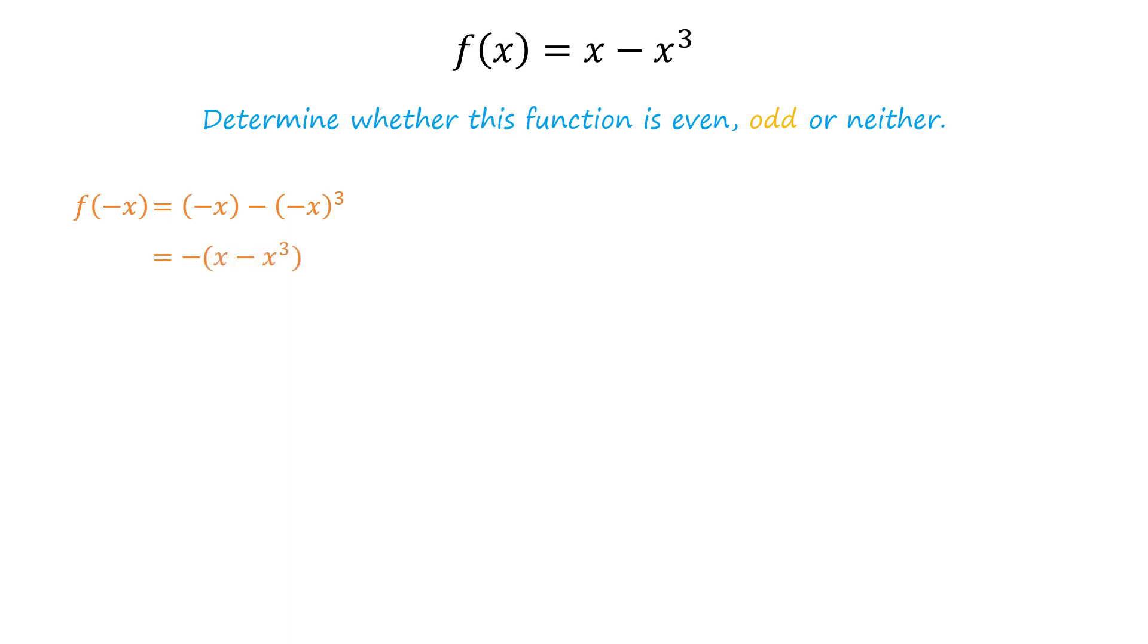Factoring out the negative sign, we can write f of negative x equals negative of x minus x cubed, which equals negative of f(x).